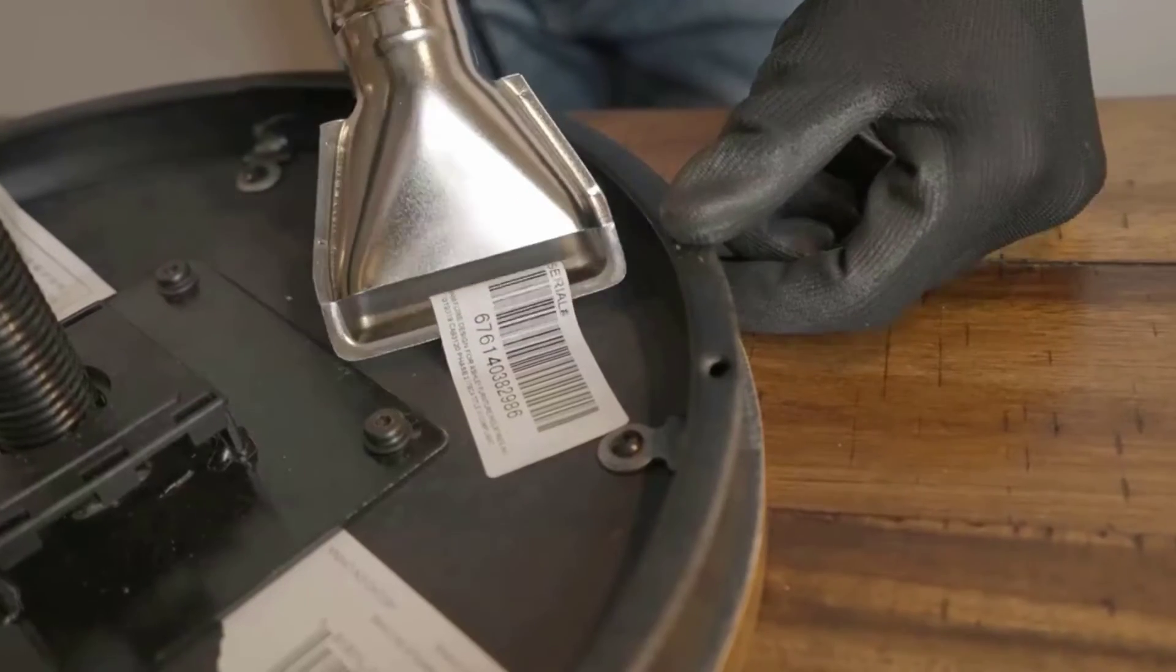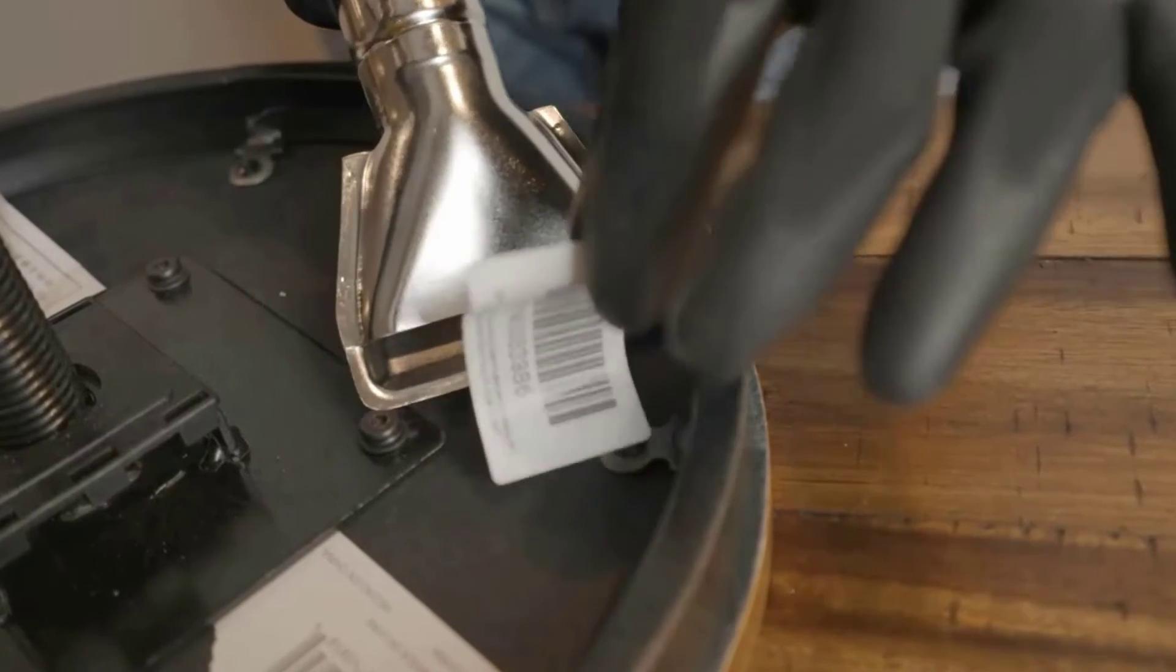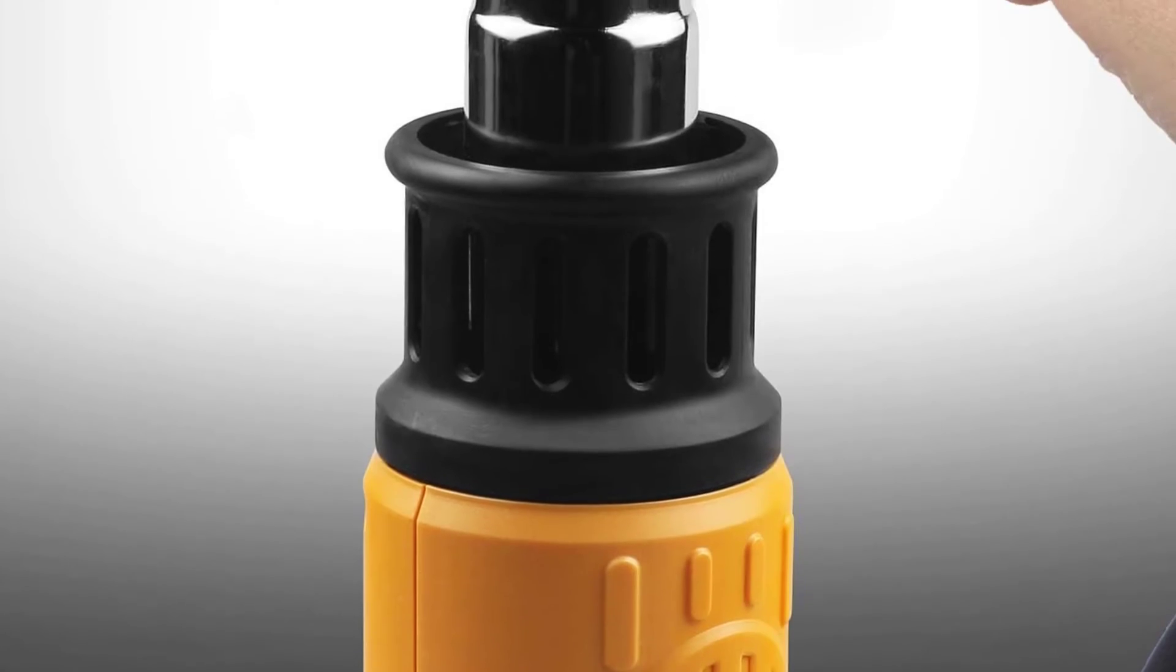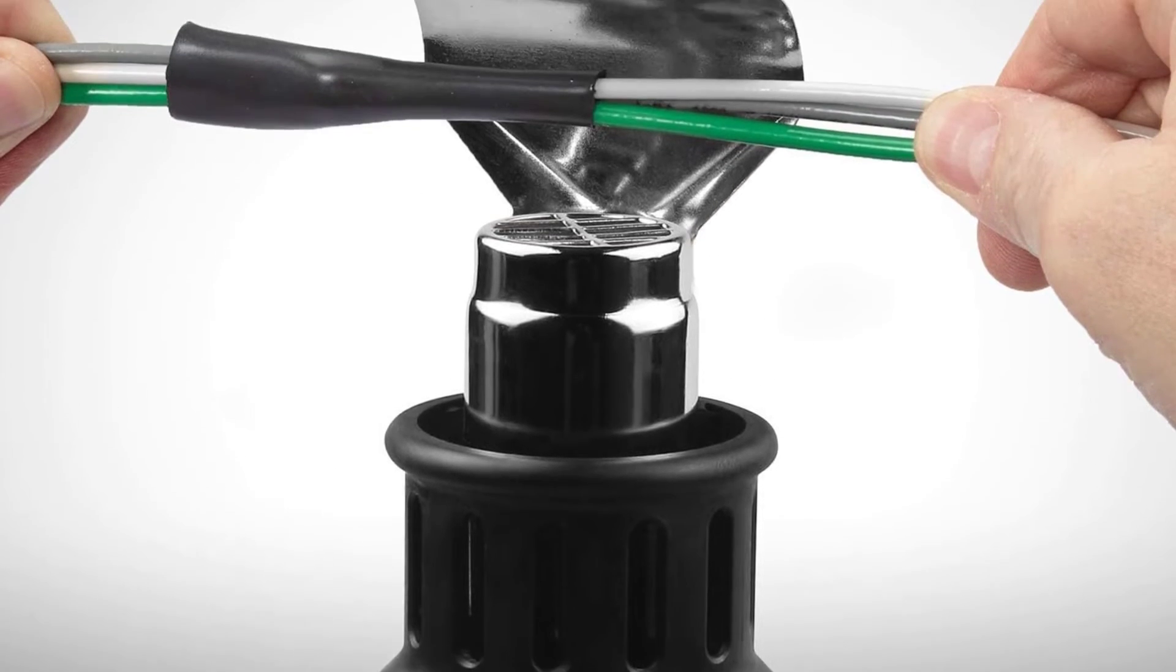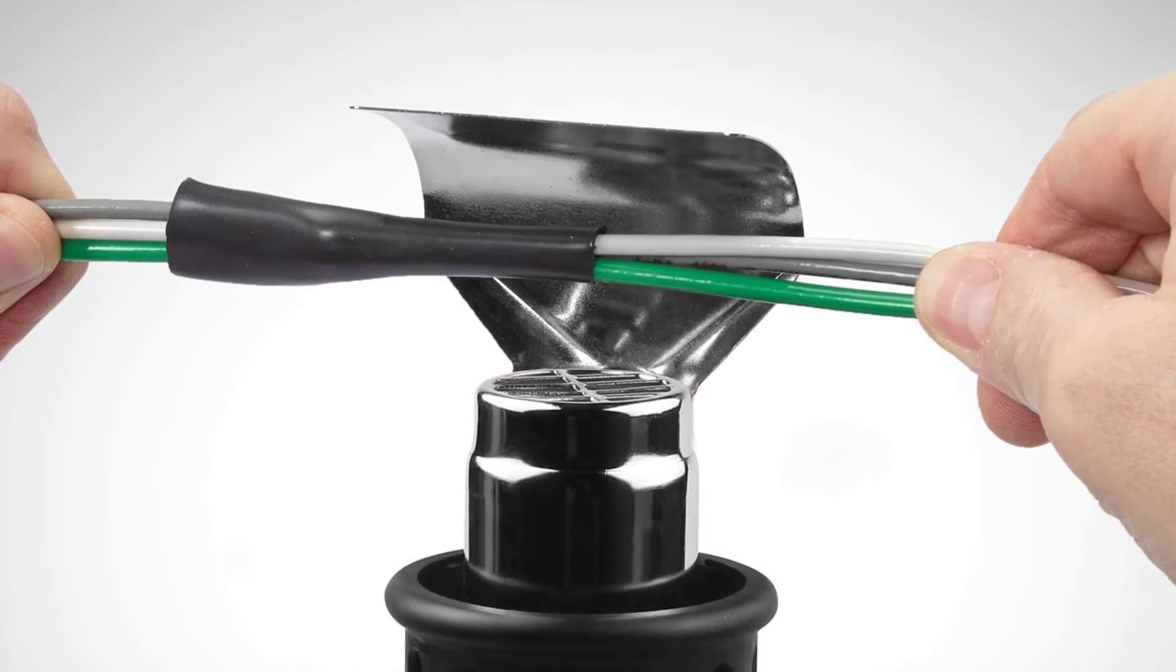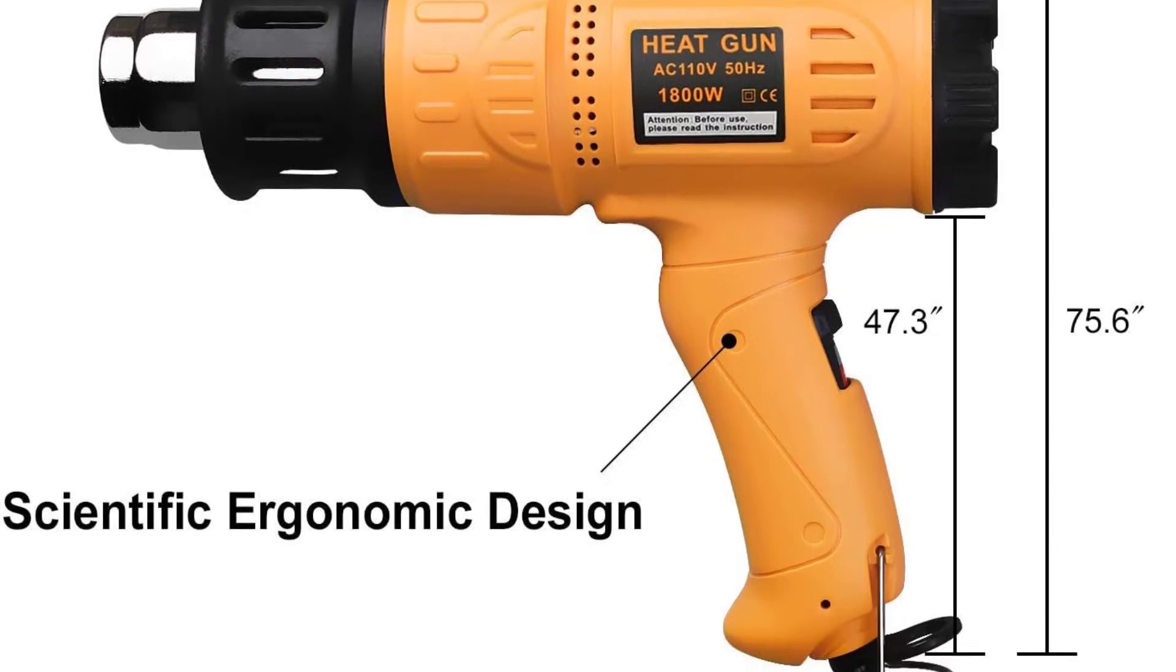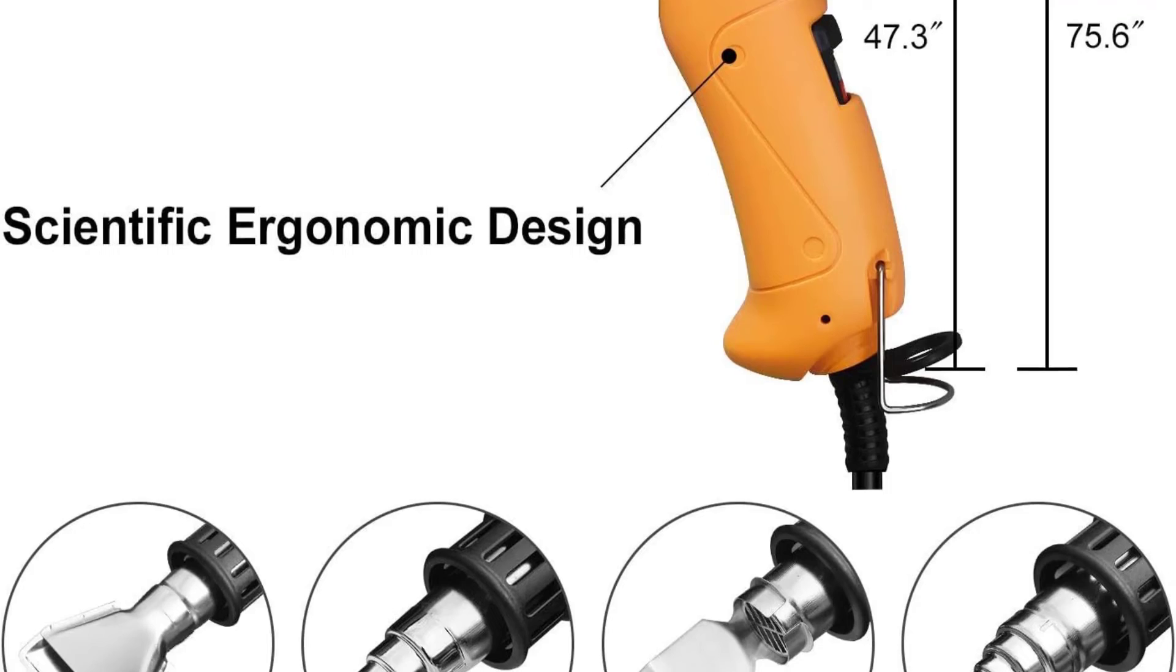Scientific ergonomic design and wide applications. Seacone Heat Gun has a scientific ergonomic design handle can prevent repetitive strain injuries and other musculoskeletal disorders. Ideal use for shrinking heat shrink tube, shrinking wrap, heating PVC, electronics, cell phone repairs, removing paint or floor tiles, loosening rusted bolts, and other heating or thawing purpose.